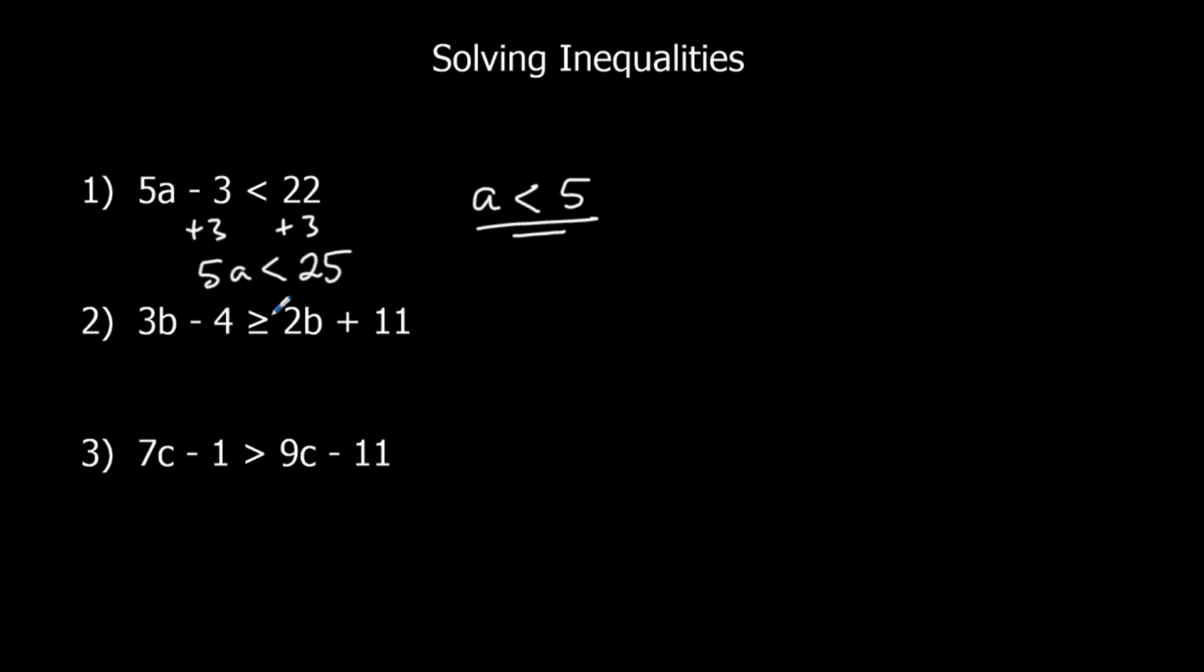Okay, here I'm going to get rid of the smallest b first. So minus 2b minus 2b. So b minus 4 is bigger or equal to 11. I'm going to plus 4 now to both sides. That gives me b is bigger or equal to 15.